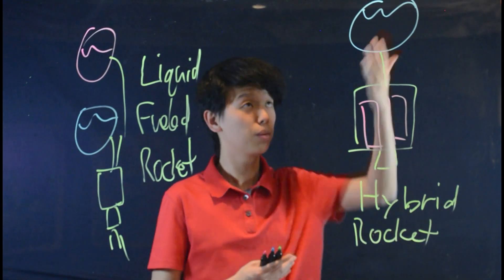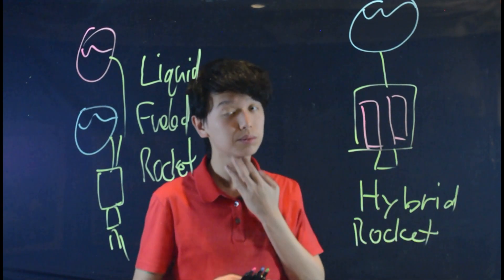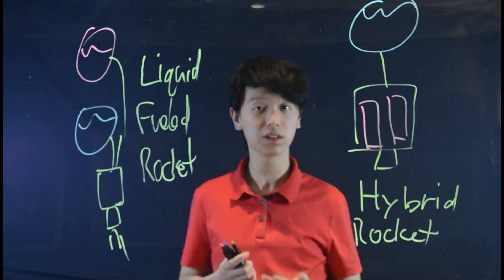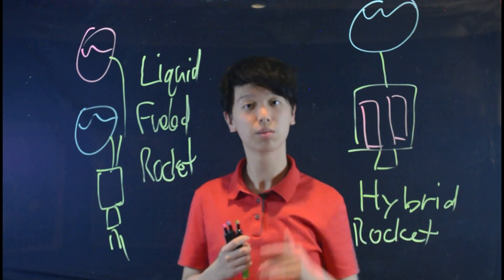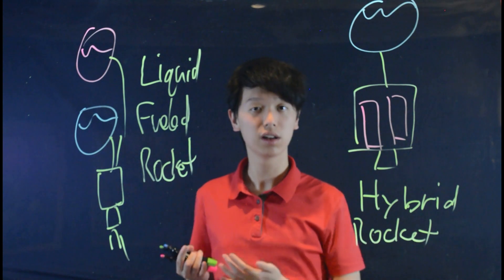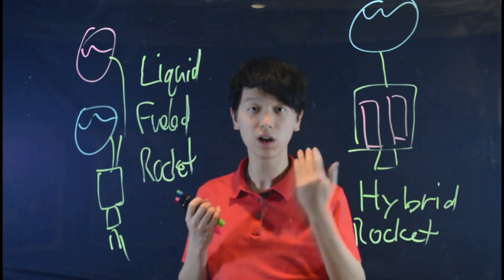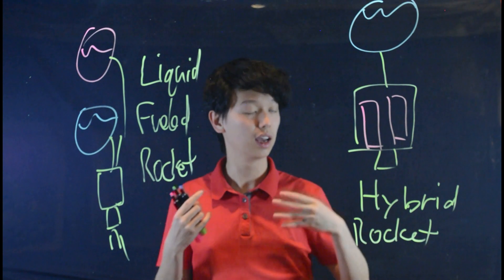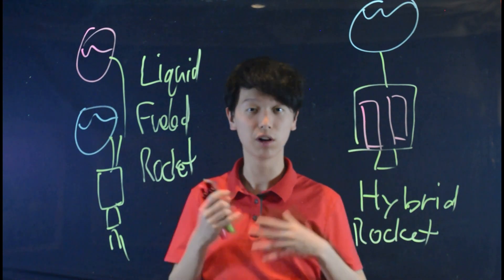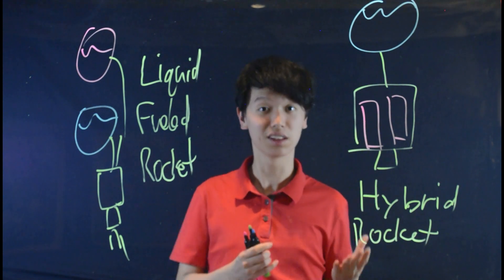Hybrid, hence, part liquid and part solid. Usually the solid component is the fuel, and the liquid component is the oxidizer, because oxidizers, such as liquid oxygen, store better at a liquid state, and fuels, such as plastics and paraffin wax, store better at a solid state.